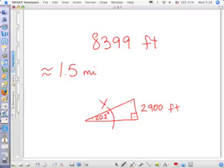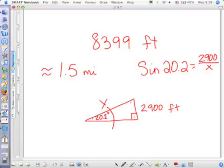Wrong. This is your hypotenuse. Yes, the hypotenuse is adjacent to the angle. But when we say adjacent, we're referring to the leg. This is your hypotenuse. You should have had sine of 20.2 is equal to 2,900 over x. And then in your calculator, you would have punched 2,900 divided by sine of 20.2.